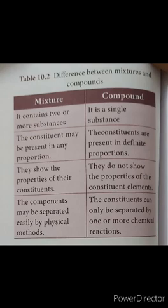Next comes the heterogeneous mixture. It is a mixture in which the components can be seen separately. For example, a mixture of sugar and sand, or a mixture of oil and water. If you take oil and water and mix them, you can see the oil at the top of the water. It does not have a uniform composition and the properties also differ.